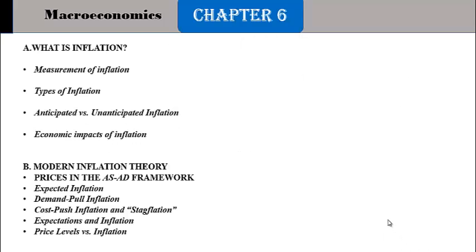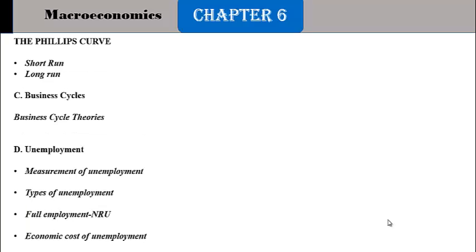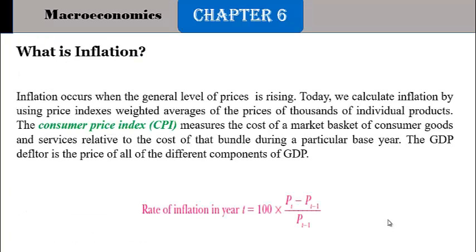Here is the table of contents for this chapter. We will discuss the types of inflation and the measurement of inflation, then some modern theories according to aggregate demand and aggregate supply, then business cycles, and finally unemployment. Let's start from inflation.